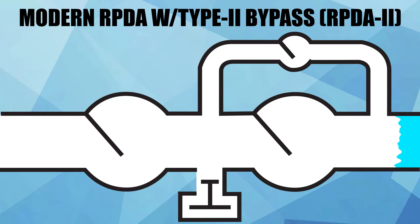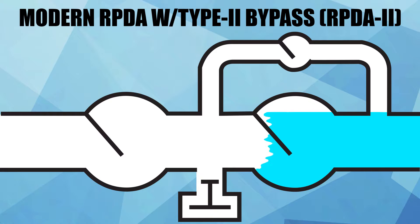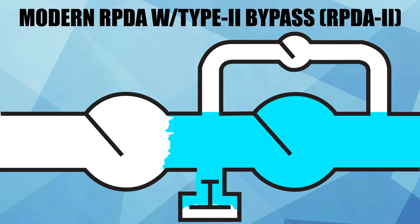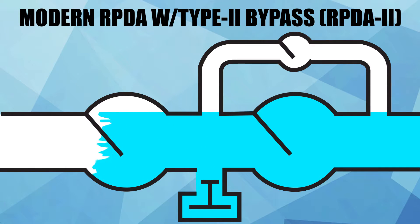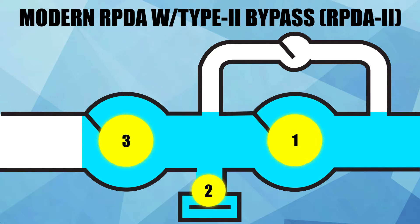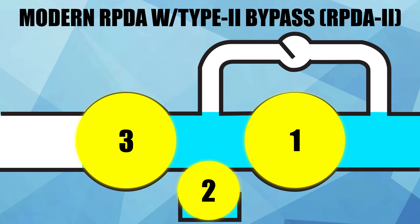During a backflow condition on a modern RPDA with a Type 2 bypass, the water first encounters the main valve second check. Next, the water encounters the main valve relief valve. And then the water encounters the main valve first check. This also provides three mechanisms of backflow protection.